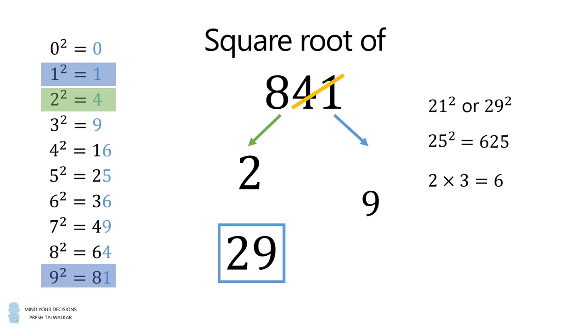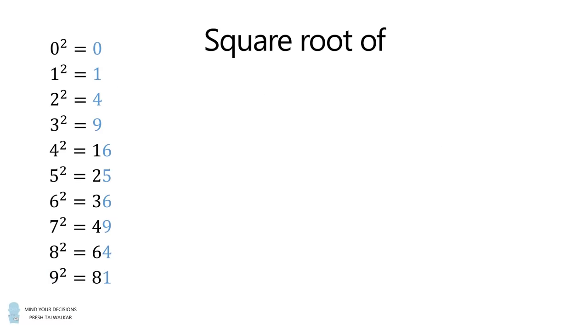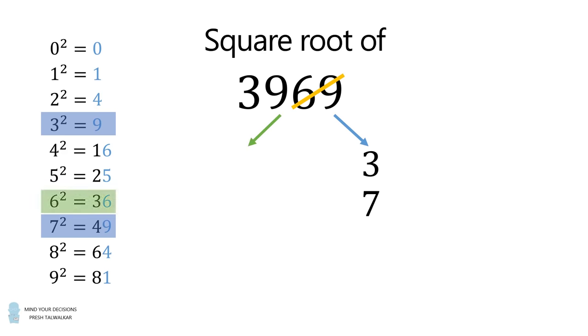This may sound a little complicated, but it'll get easier as we work through more examples. Let's now calculate the square root of 3969. We go to the last digit of 9, and we know that it's either 3 or 7. We then cross out the last two digits, and we look for the square that's closest to 39 without going over. This will be 6 squared, which is equal to 36.